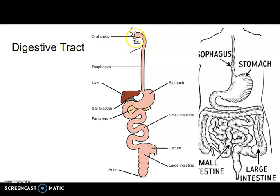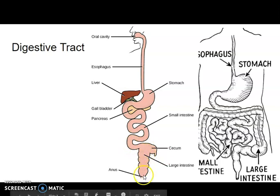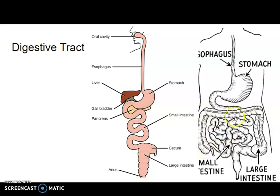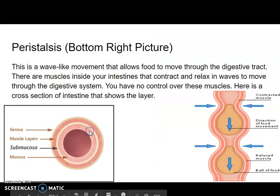This is your digestive tract. Your oral cavity — basically a fancy word for mouth — starts right here. It travels down the esophagus, which is this tube, into your stomach. From your stomach it travels into the small intestine, and then into the large intestine and out. The small intestine weaves around and around until it enters the large intestine, which makes its way around and then comes out.